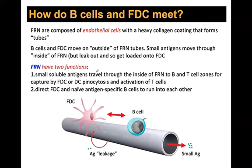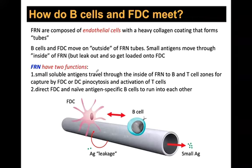Student question: Do macrophages directly transport antigen to FDCs, or does it go through B cells? Answer: It's more accurate to call it transport rather than presentation. Macrophages don't directly transport to FDCs — it must go through the non-antigen-specific follicular B cells as an intermediate. 'Presentation' is reserved for antigen presentation to B cells and T cells.